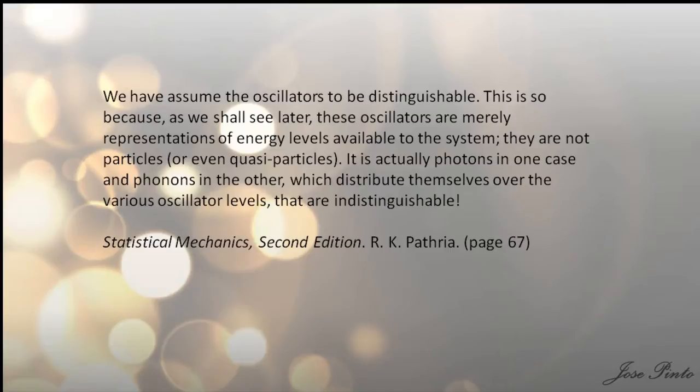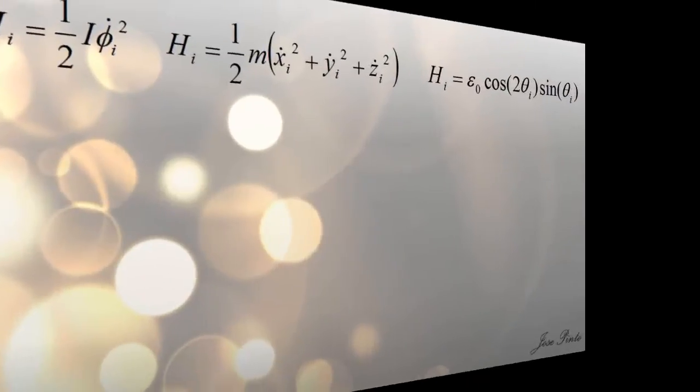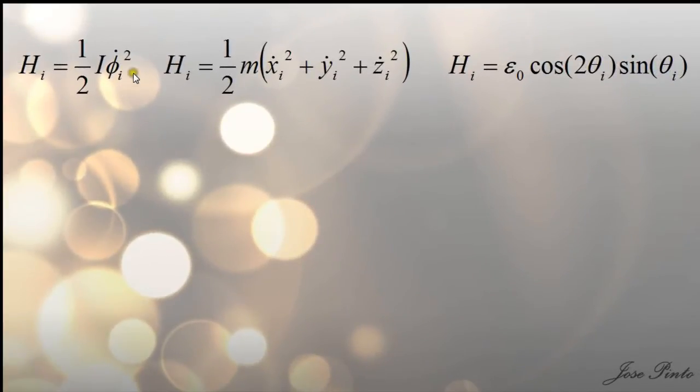I think there is a better way of explaining this. So, let's see. Consider three systems. The first one, I'm gonna call it System A. This is a collection of objects or particles, each having a Hamiltonian of this form.